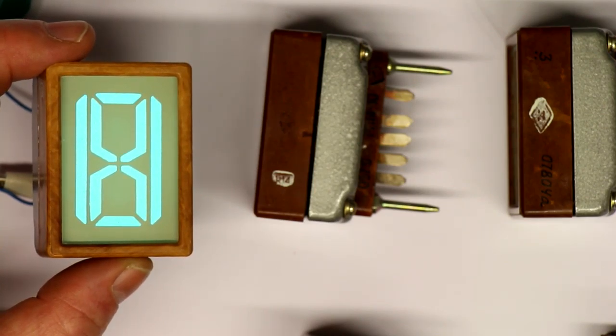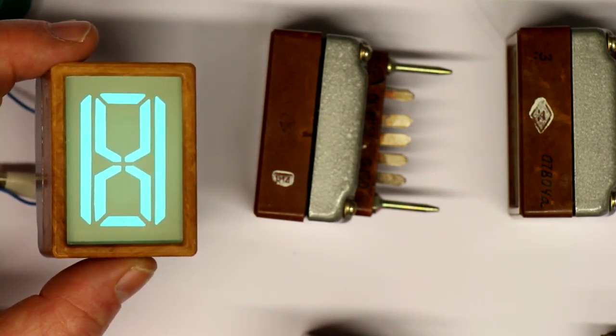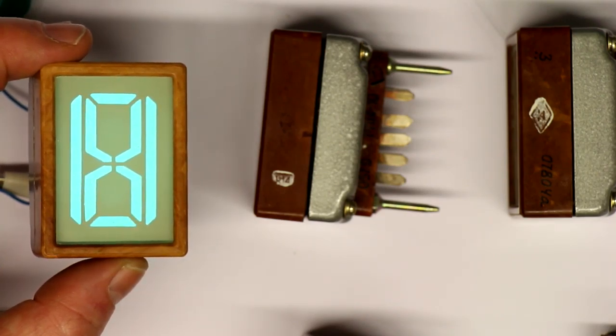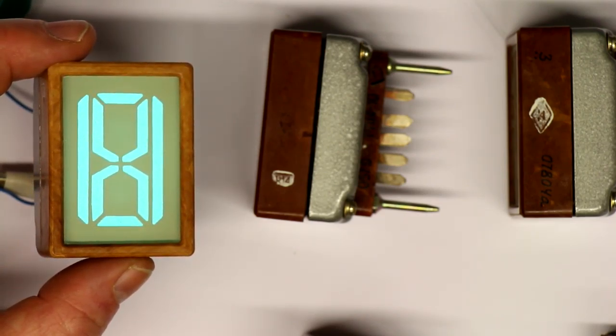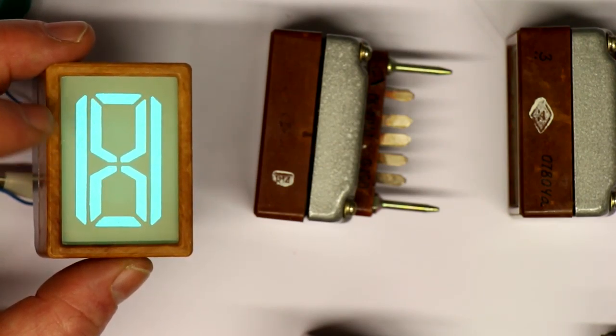You can see they look a little bit like VFD displays from the color. The color here on the camera is not exactly what it looks like in reality. It's more a blue-green, a cyan type kind of color.